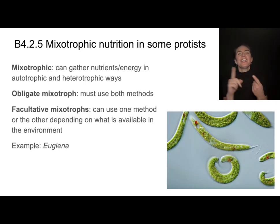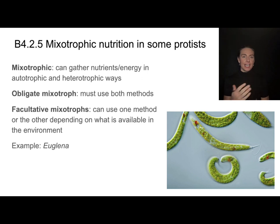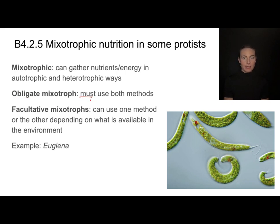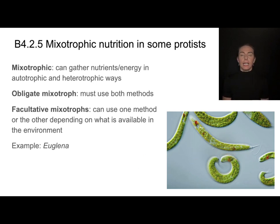What about a mixotroph? These are organisms that can gather nutrients and energy in both autotrophic and heterotrophic ways — consuming things in addition to producing their own food through photosynthesis. We have obligate mixotrophs, which must use both methods, and facultative mixotrophs, which can choose one method or another depending on what's available in the environment. For example, this euglena may choose photosynthesis if there's plenty of sunlight, but may switch to being a heterotroph if there's an abundance of food to consume.